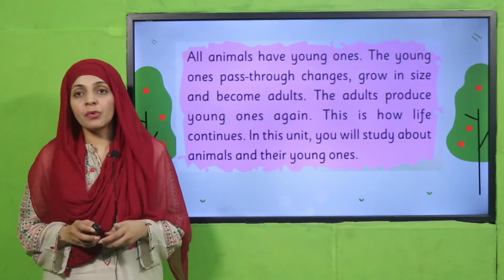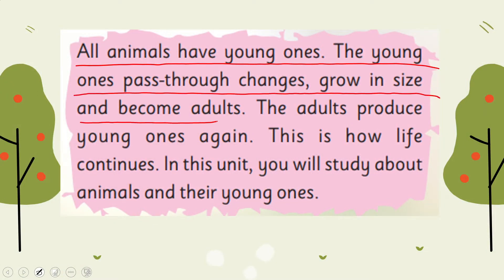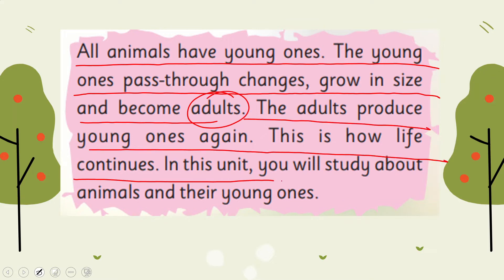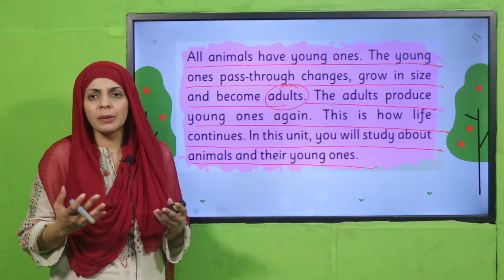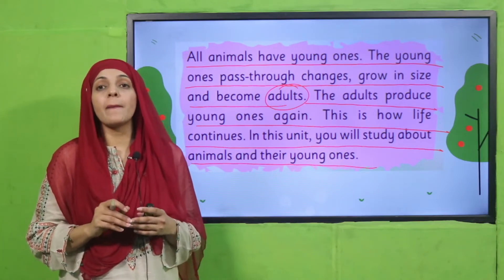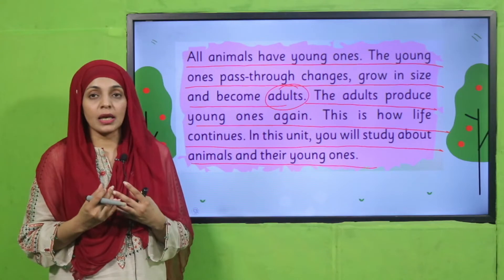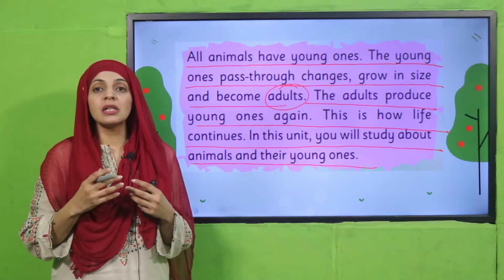Let's quickly move forward towards a brief introduction. All animals have young ones. The young ones pass through changes, grow in size, and become adults. The adults produce young ones again — this is how life continues. In this unit you will study about animals and their young ones. We have land, water, flying birds, and insects, and every animal produces young ones.